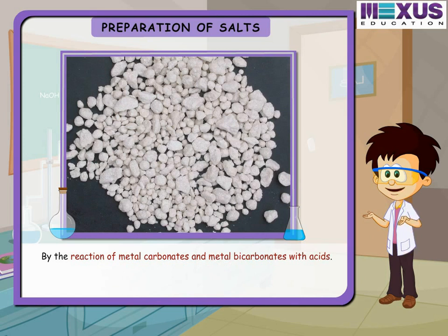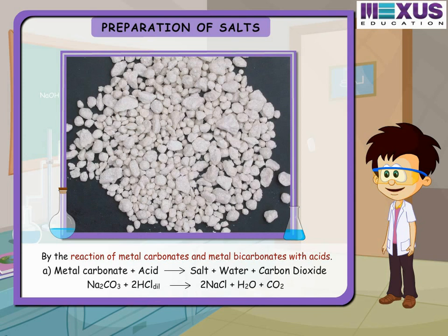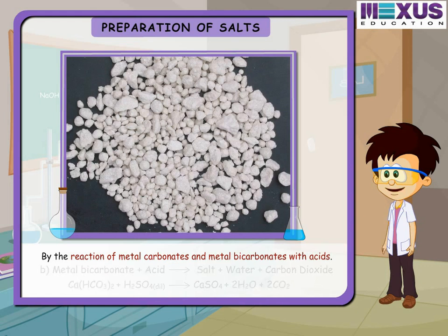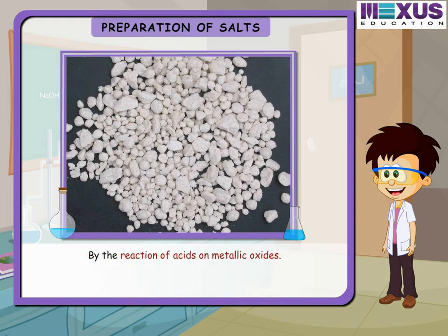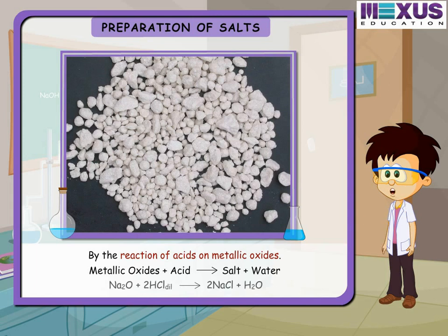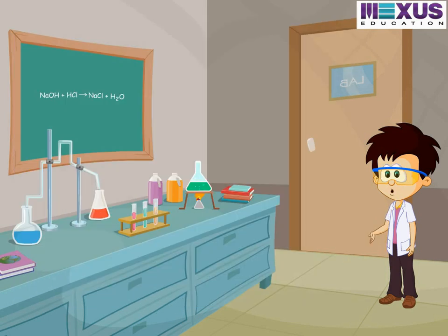By the reaction of metal carbonates and metal bicarbonates with acids: a metal carbonate reacts with an acid to produce salt, water, and carbon dioxide gas. A metal bicarbonate on reaction with an acid also gives salt, water, and carbon dioxide gas. By the reaction of acids on metallic oxides: metallic oxides combined with acids produce salt and water. For example, sodium oxide with dilute hydrochloric acid gives salt and water.